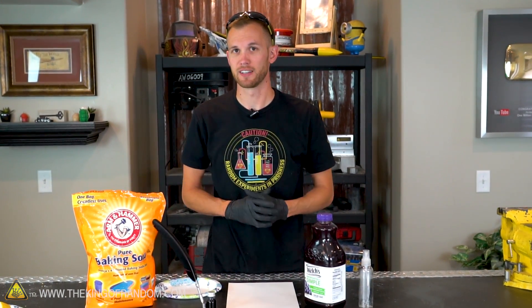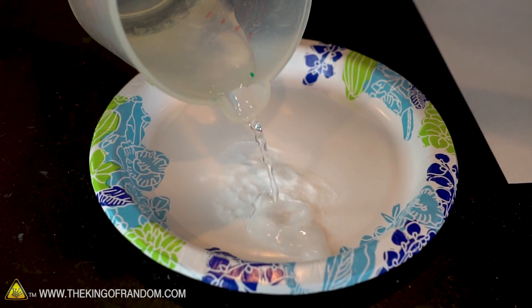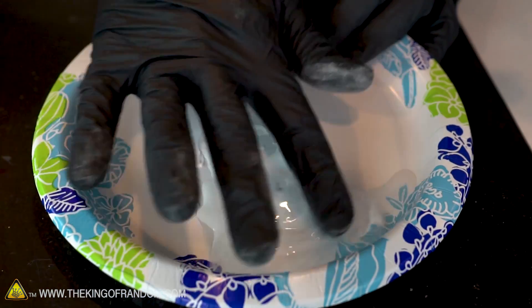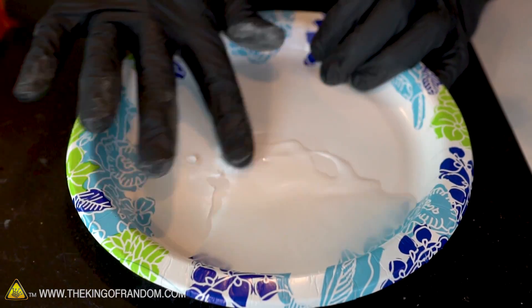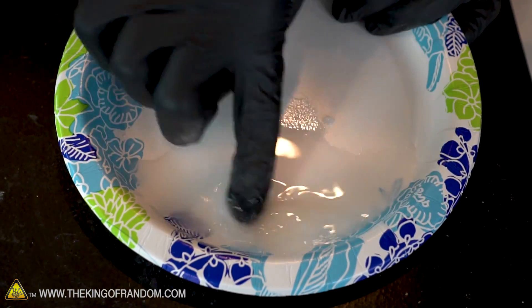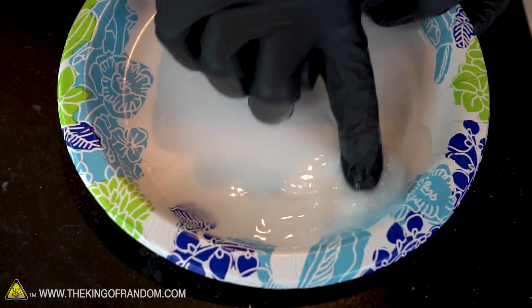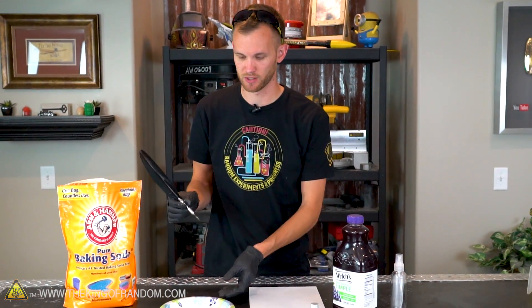Our second method involves a mixture of baking soda and water as the ink, and grape juice to reveal it. I've mixed up about one part water and one part baking soda here. Not all the baking soda will dissolve, but hopefully it will work just fine for our invisible ink. I'll try using my fancy pen again to see if this works.